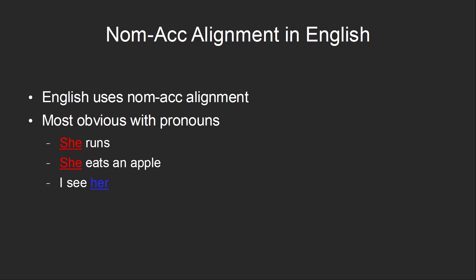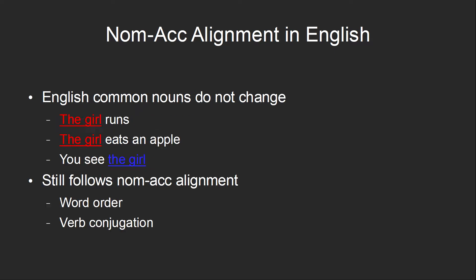This sort of alignment is what we use in English, and it's most obvious using sentences with pronouns — for example, 'she runs,' 'she eats an apple,' 'I see her.' Common English nouns don't change; 'the girl' remains the same regardless of the role in the sentence. However, we can still say that English follows nominative-accusative alignment because of word order. The subject and the agent both appear before the verb, while the patient appears after the verb.